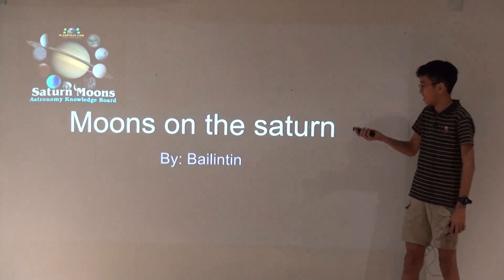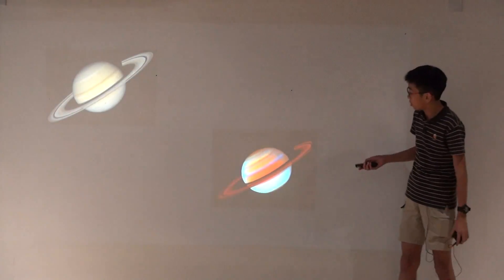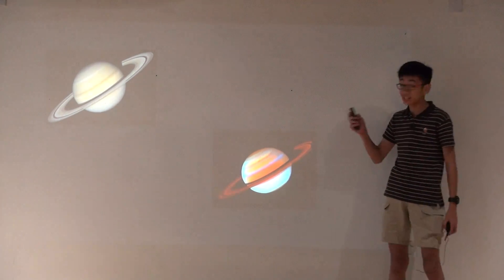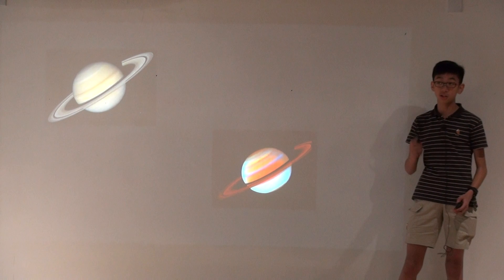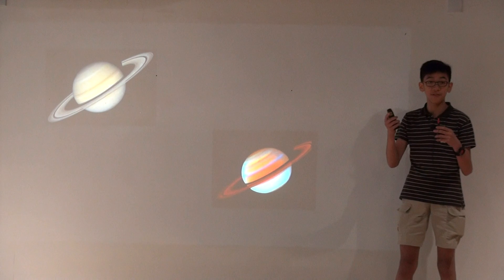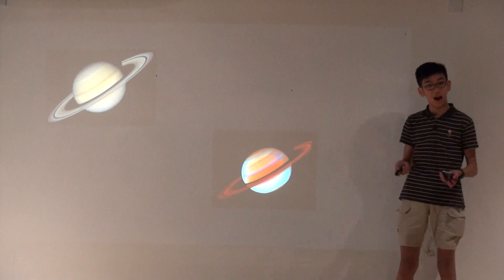So the moons on Saturn. Basically we will talk about Saturn first. Saturn has 63 moons, but only 13 of them are qualified as moons that are around 50 kilometers wide.